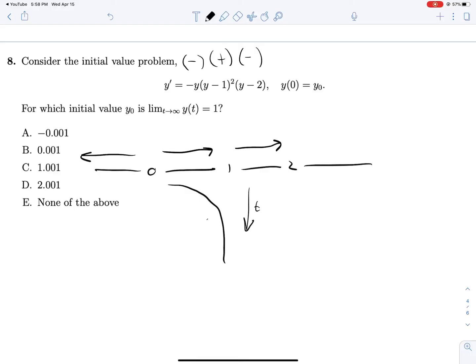But then if we start anywhere above 1, below 2, will flow up to 2. And so that gives us an answer of 0.001. If we start there, this constant motion will push us up to 1 as time approaches infinity.